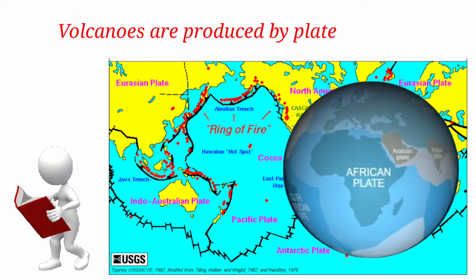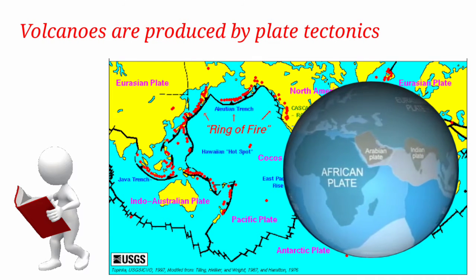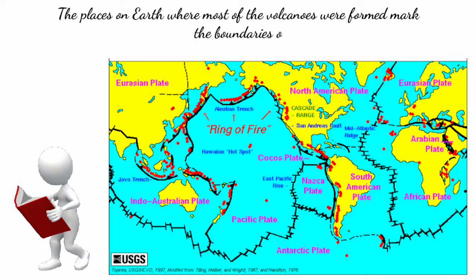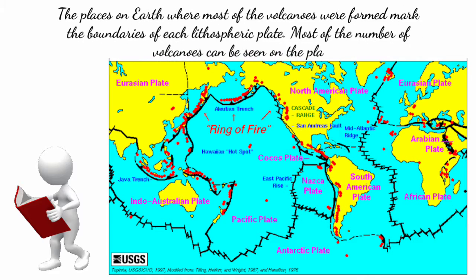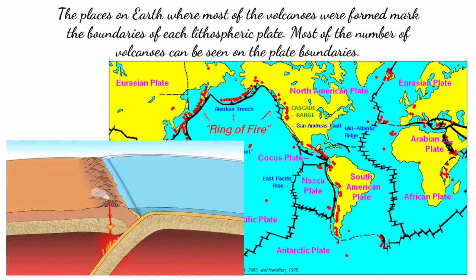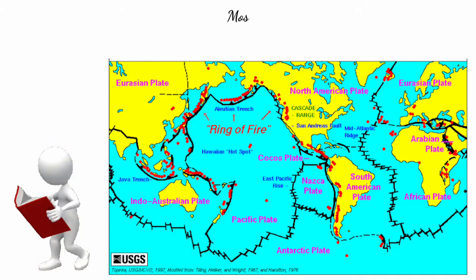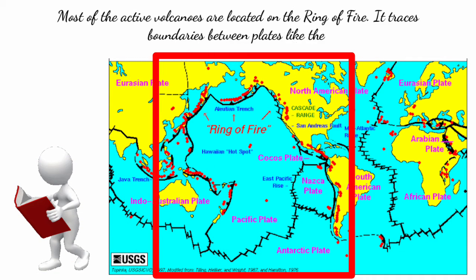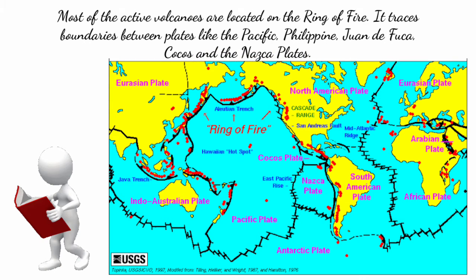Volcanoes are produced by plate tectonics. As you can see in the illustration, the places on Earth where most volcanoes were formed mark the boundaries of each lithospheric plate. Most volcanoes can be seen at the plate boundaries — this happens during the collision of two plates. Most of the active volcanoes are located on the Pacific Ring of Fire, which traces boundaries between plates like the Pacific, Philippine, Juan de Fuca, Cocos, and Nazca plates.